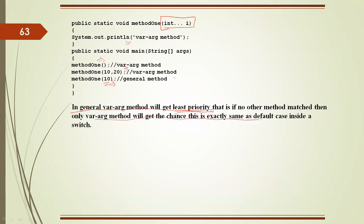Case 5: When both a general method and a varargs method match a call, the general method gets higher priority. The varargs method will get the lowest priority — similar to the default case inside a switch statement. If no other method is matched, then the varargs method gets a chance to execute.